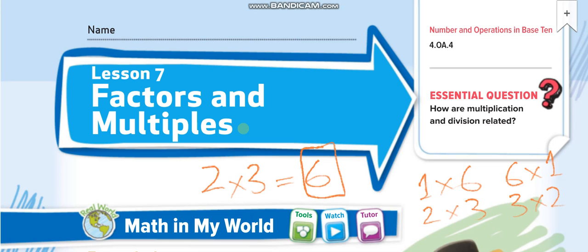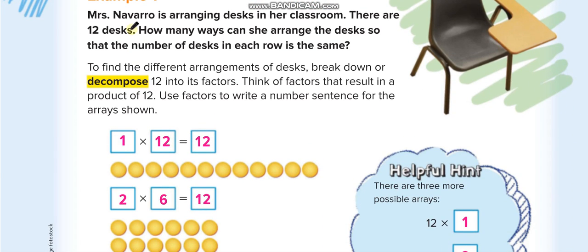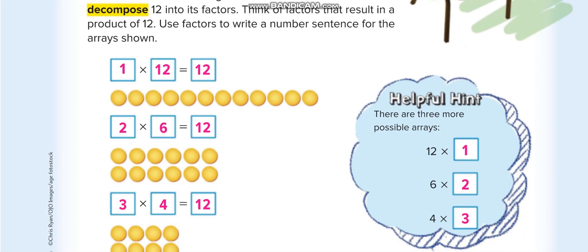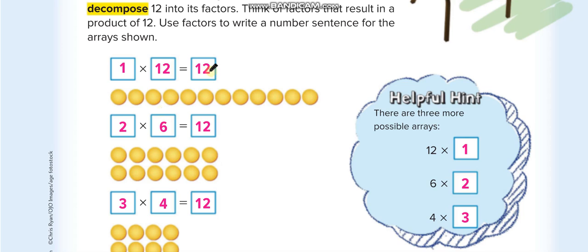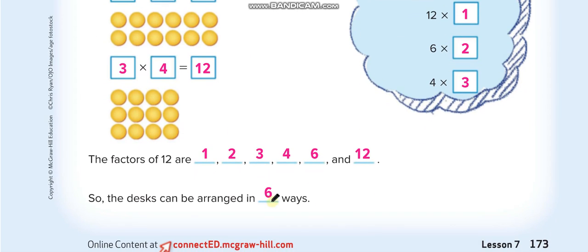In the first example, they are asking about arranging 12 desks — in how many ways can they be arranged? You find the factors of 12: 1×12, 2×6, 3×4, and their opposites 12×1, 6×2, 4×3. So the desks can be arranged in 6 ways.